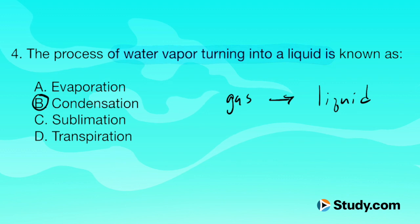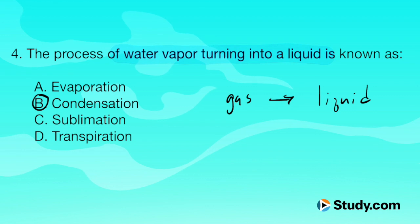Evaporation would be the opposite process — going from a liquid to a gas. C, sublimation, is when we go directly from a solid to a gas. And D, transpiration — that is a process of plants as they take in CO2 and release oxygen.